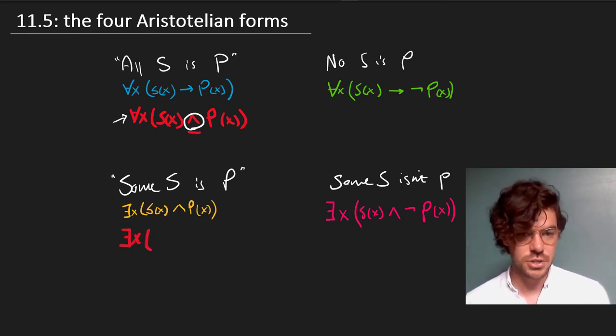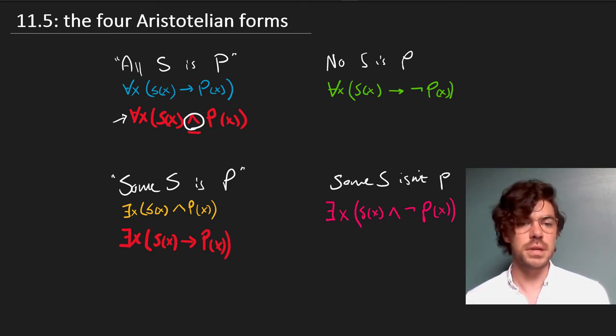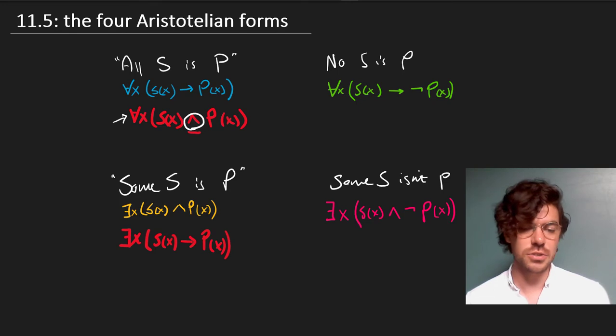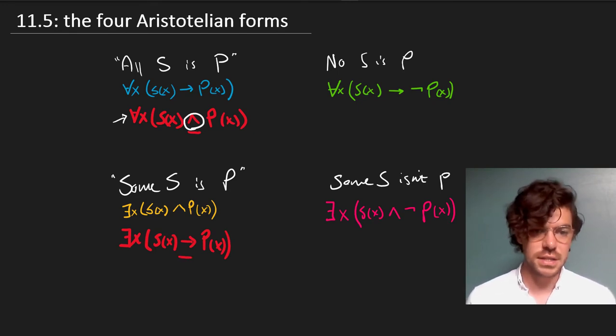Conversely, we might be tempted to embed a conditional in our existential: if something is an S then it's a P. The problem is that an existential makes a claim about existence, and we've seen from the semantics of our conditional that it can be true if the antecedent is false.